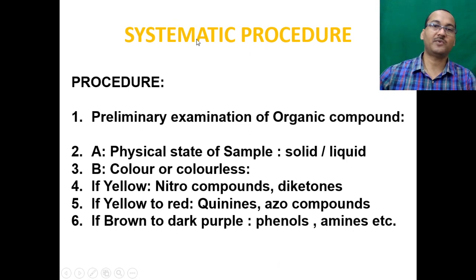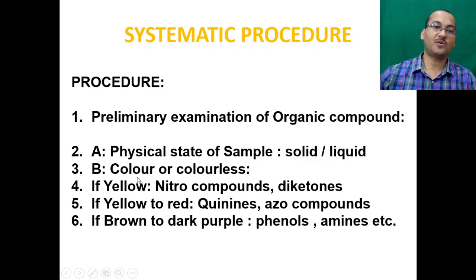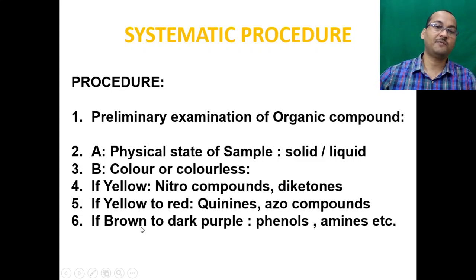The systematic procedure begins with preliminary examination of the organic compound. First, note the physical state — solid or liquid — then observe the color. If the compound is yellow, it may be a nitro compound or diketone, indicating nitrogen is present. If yellow to red, it may be quinone or azo compound, also suggesting nitrogen. If brown to dark purple, it may be phenol or amines, where nitrogen may also be present.